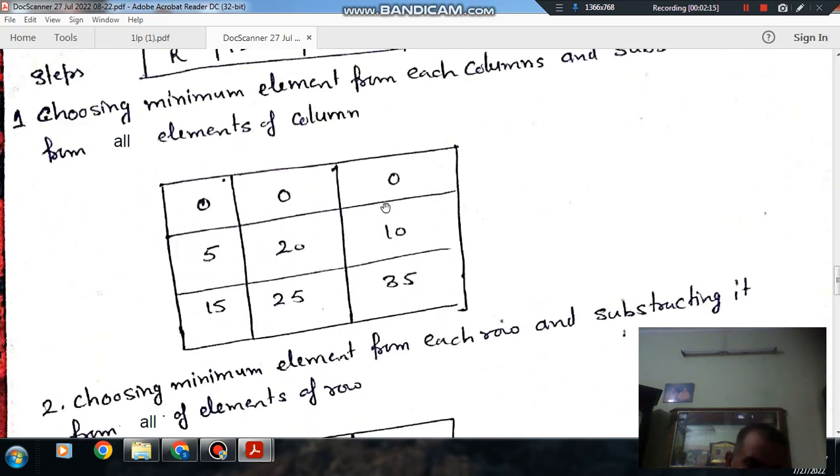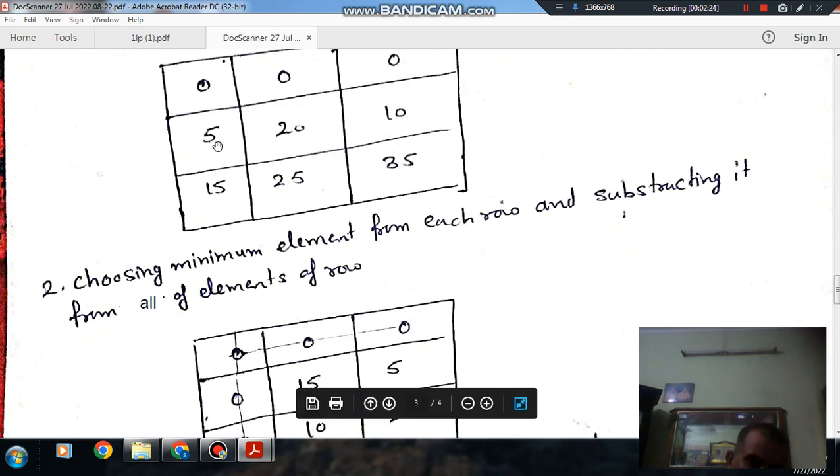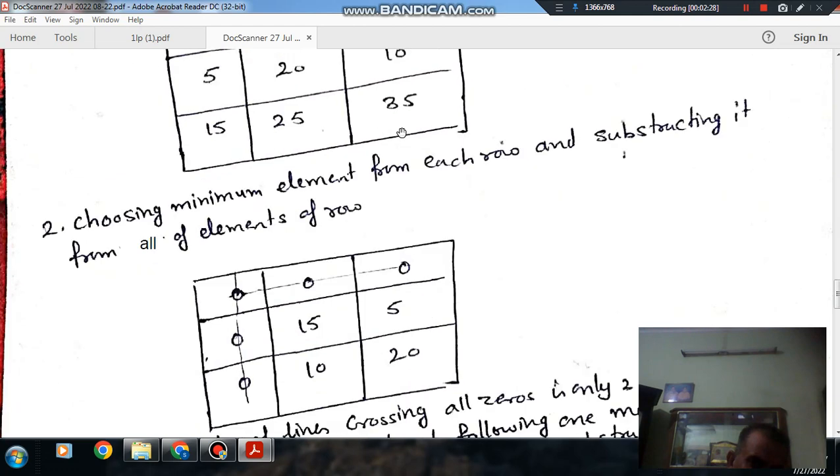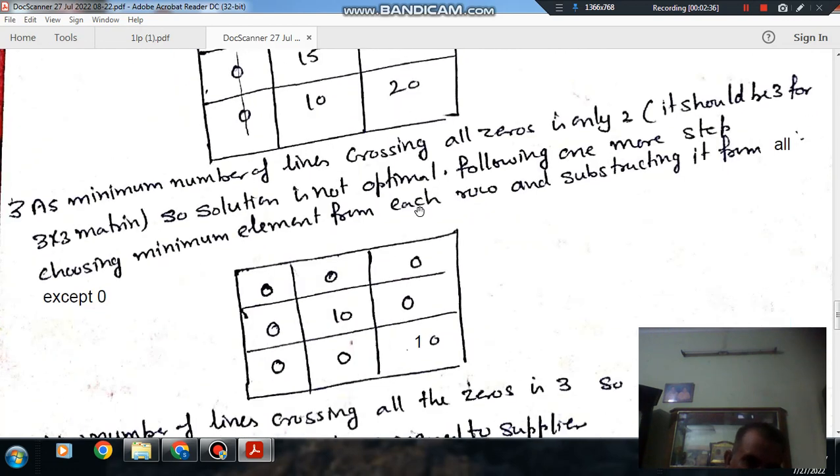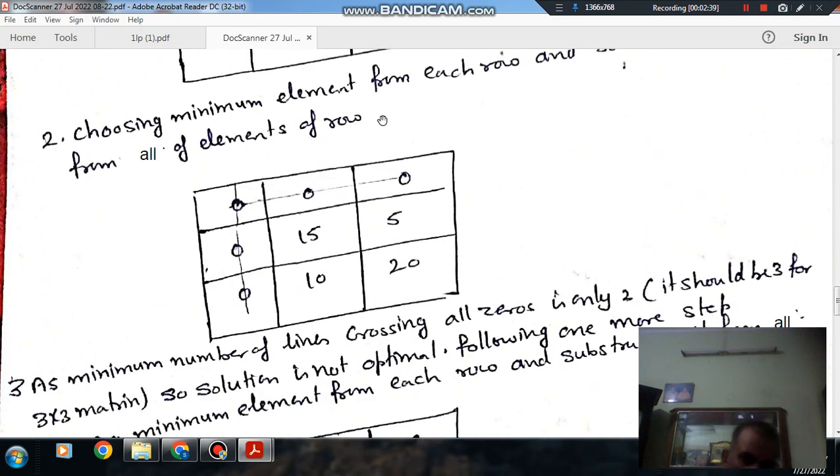Here the minimum element is 0, so it will be 0, 15 and 5. Here the minimum element is 0, so this row will be the same. Here the minimum element is 5, so this row will change to 0, 15 and 5. Here the minimum element is 5, so this row will change to 0, 10 and 20.